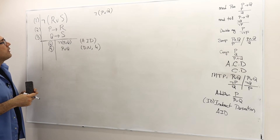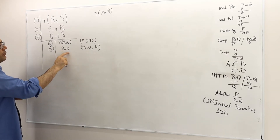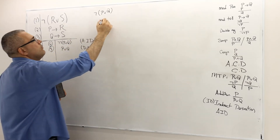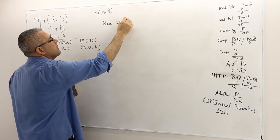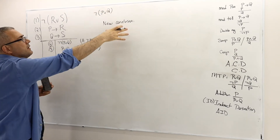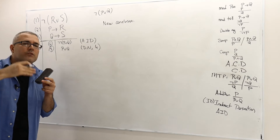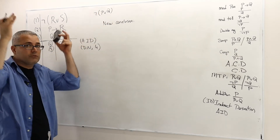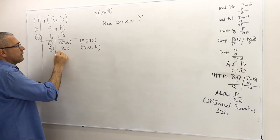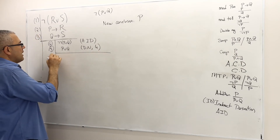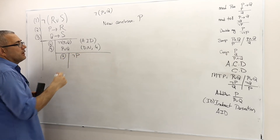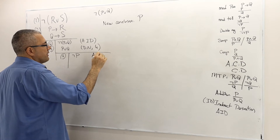What I would like to prove is that if line four and line five are true, then P must be true. So this is a new conclusion — a conclusion I am going to use to prove my main conclusion. The new conclusion is that P is true. So I'm going to open a new box, and in line six I'm going to assume not P. This is assumption for indirect derivation.